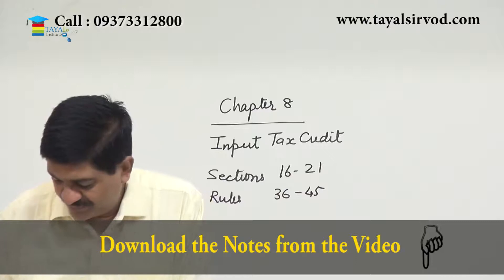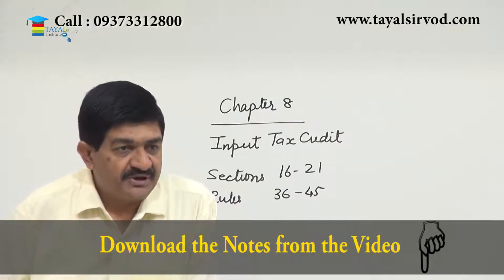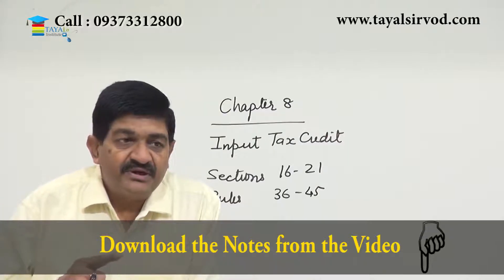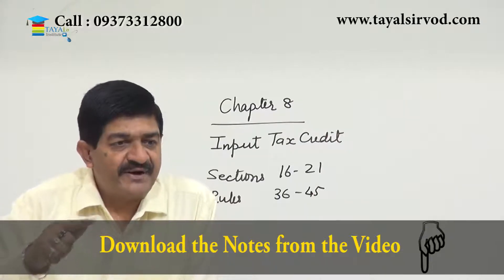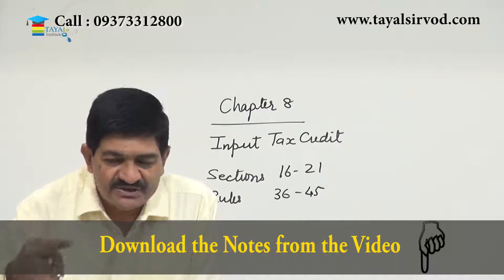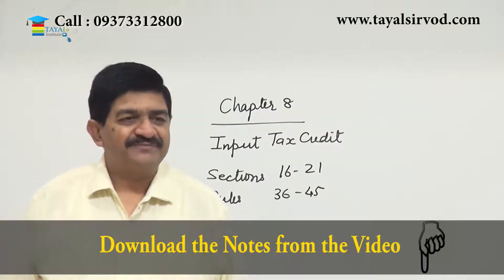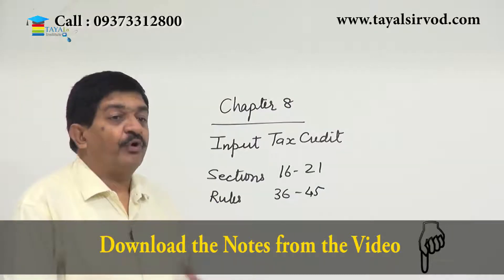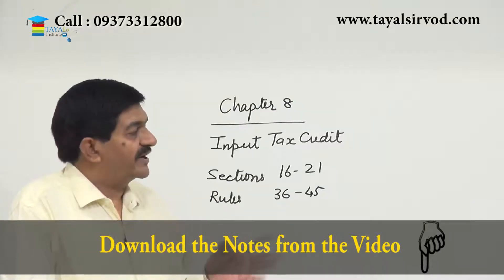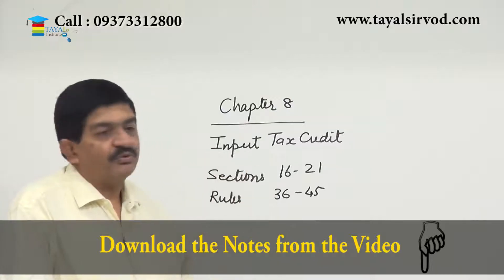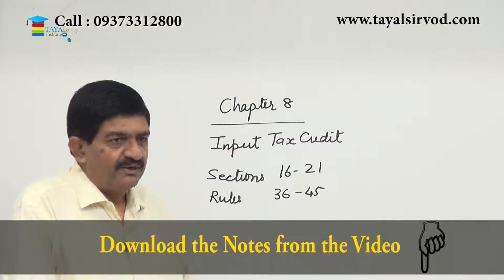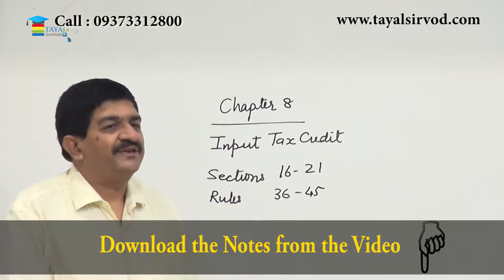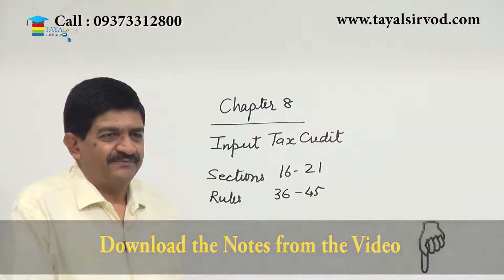Within the first chapter, if you remember, we talked about why GST has been brought in — so that there is a complete chain of credit and the next person in the chain pays tax only on the value addition done. So who can avail credit, for what, when, and how the credit is to be utilized — everything we are going to talk about in this chapter.